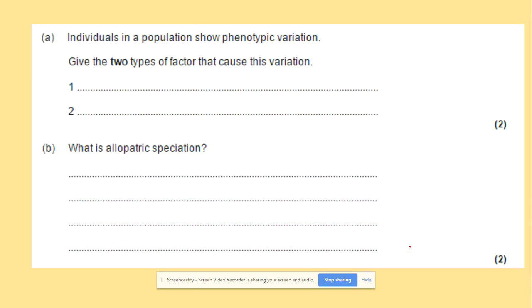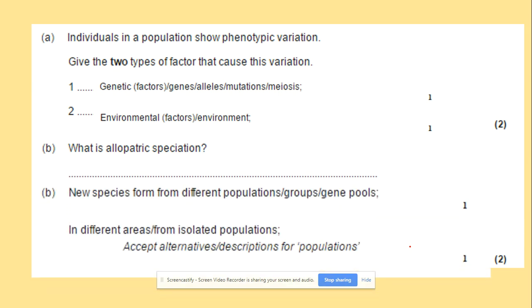Another question. We've got the individuals in the population show phenotypic variation and give two types of a factor that cause this variation. We've done it today. We've got the genetic and environmental factors. What is allopatric speciation? I shouldn't really put that question in here, but let's recap on this. Allopatric speciation is the formation of new species from different populations in different areas, from isolated populations.